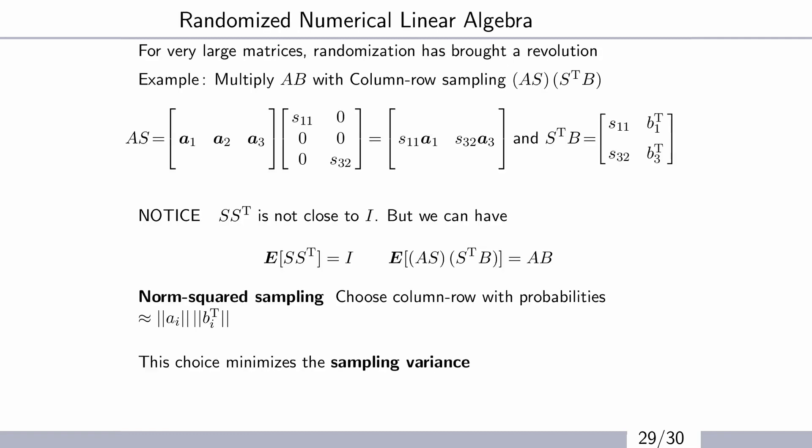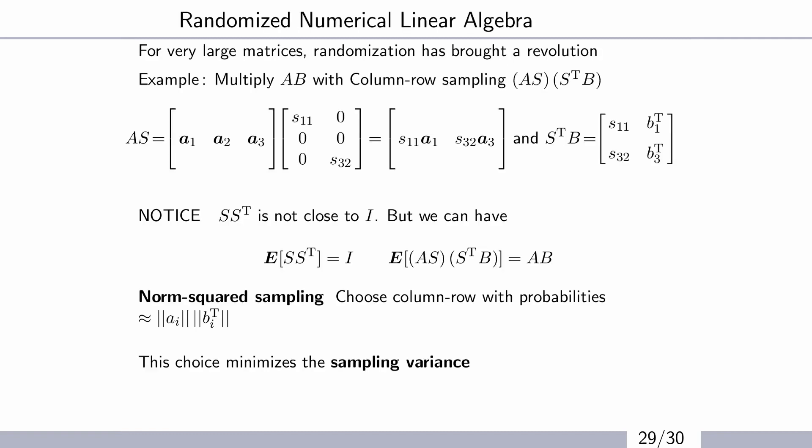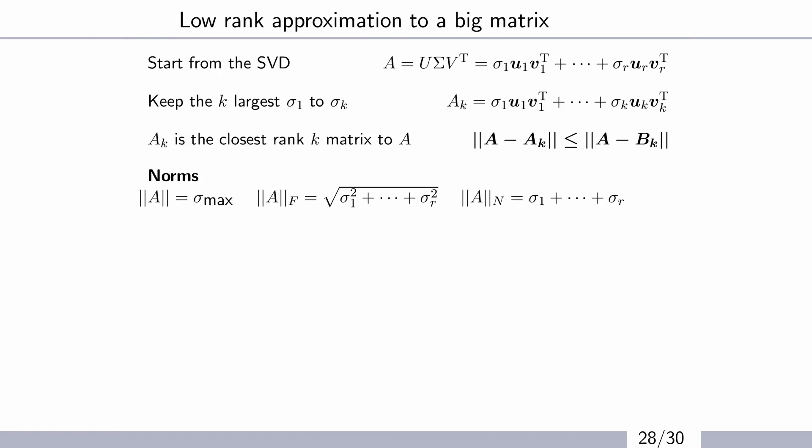Maybe the next slide even mentions that word randomized numerical linear algebra. So the singular value decomposition, this is what we just talked about with the U's and the V's and the sigma's. Sigma 1 is the biggest. Sigma r is the smallest. So in data science, you very often keep just these first ones.